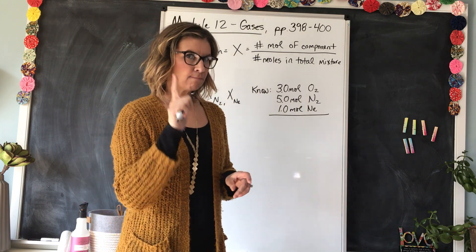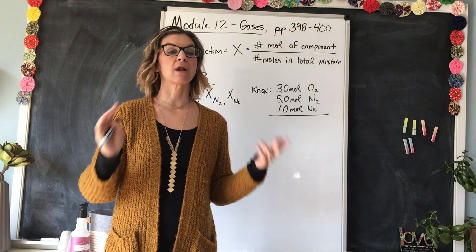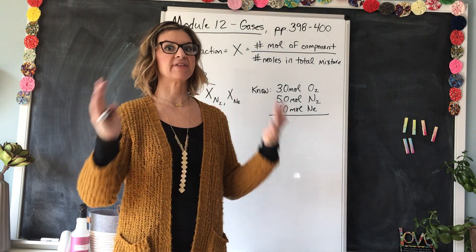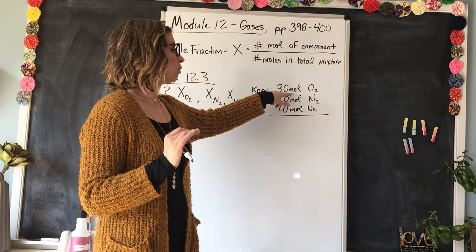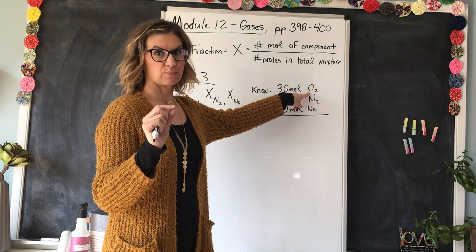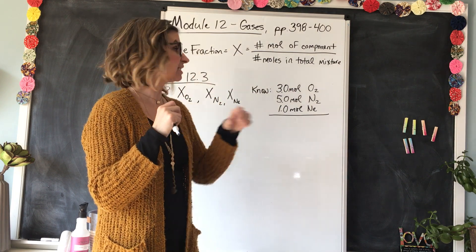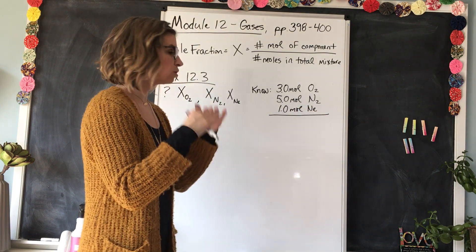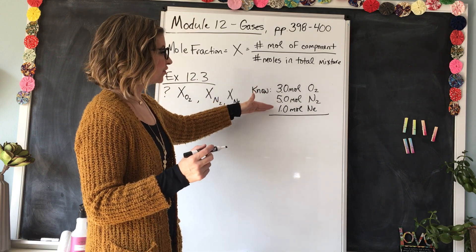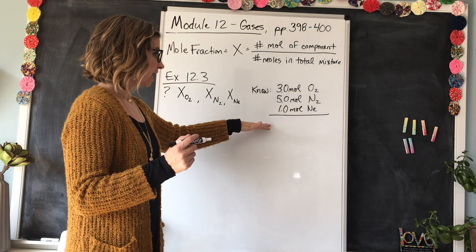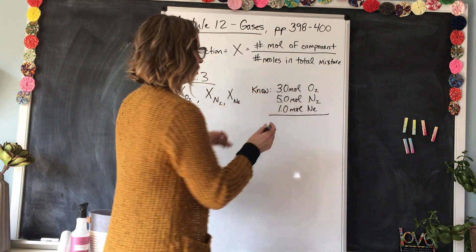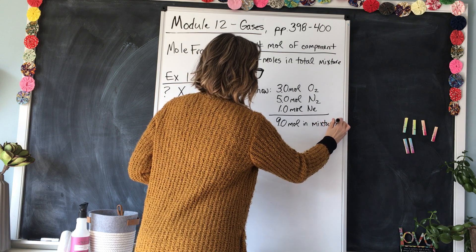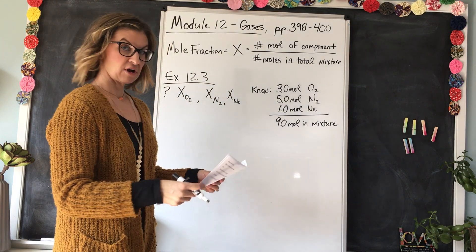Remember, moles is just an amount — like 'dozen' means 12, a mole means 6.02 × 10²³. So we have that many molecules of O2, N2, and Ne atoms present. To find the total moles in the mixture, we add: 3 + 5 + 1 = 9.0 moles total. Now we can calculate the mole fraction for each component.